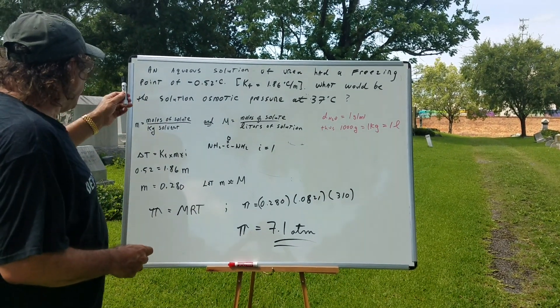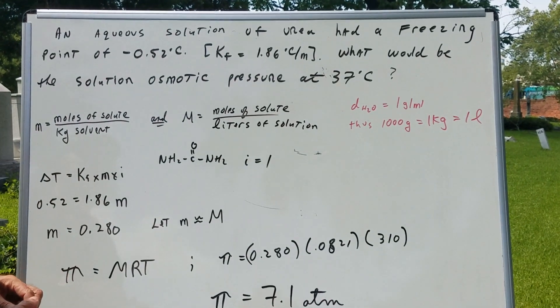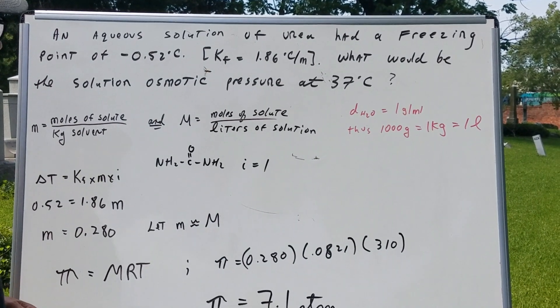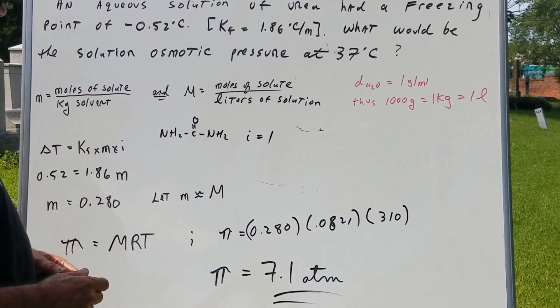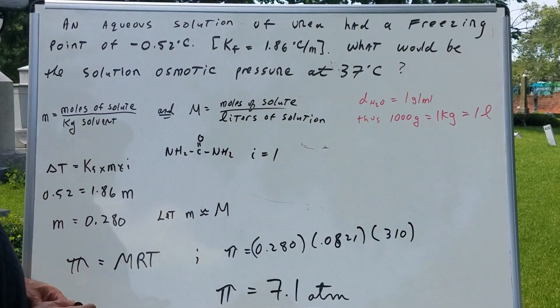Now, an aqueous solution of urea had a freezing point of negative 0.52 degrees Celsius. And I give you the freezing point constant of 1.86 degrees Celsius per molal. What would be the solution osmotic pressure at 37 degrees Celsius?